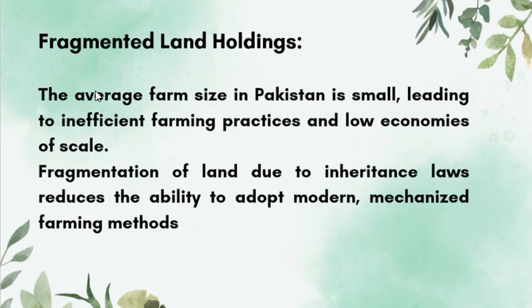Fragmented land holdings are another major issue. The average farm size in Pakistan is small, leading to inefficient farming practices and low economies of scale. Fragmentation of land due to inheritance reduces the ability to adopt modern and mechanized farming methods, and fragmented land holdings are a major cause of reduced productivity.